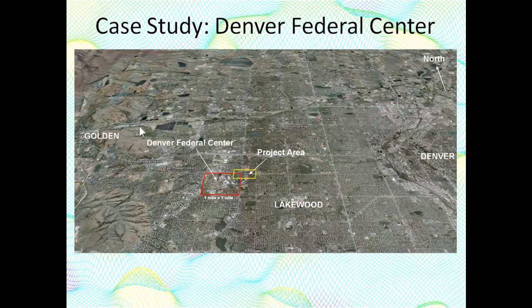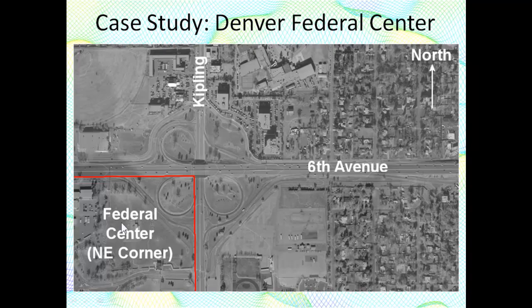The actual study area, shown by the yellow rectangle, includes a portion of the northeastern corner of the federal center and an off-site region to the northeast. Here is an enlargement of the study area showing the federal center to the southwest, Kipling, a major north-south thoroughfare, and Sixth Avenue, a divided four-lane highway. The area to the east is made up of residential neighborhoods.